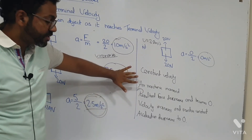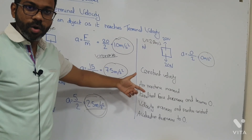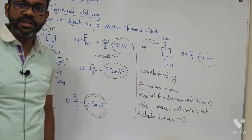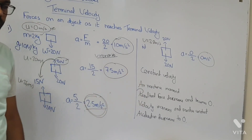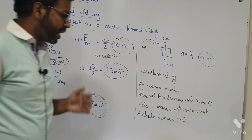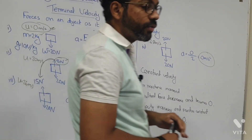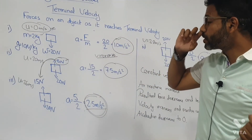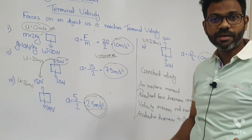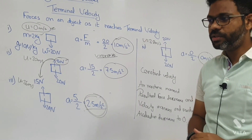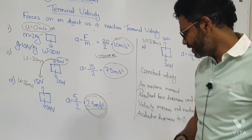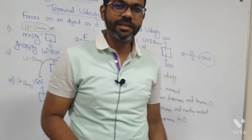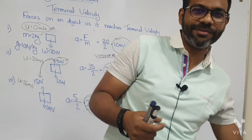So these are the things you have to keep in mind — the changes that happen when an object is falling through air or facing friction. We will see how the velocity-time graph of this object looks in the next video. See you again — keep watching the videos so that you can understand better.